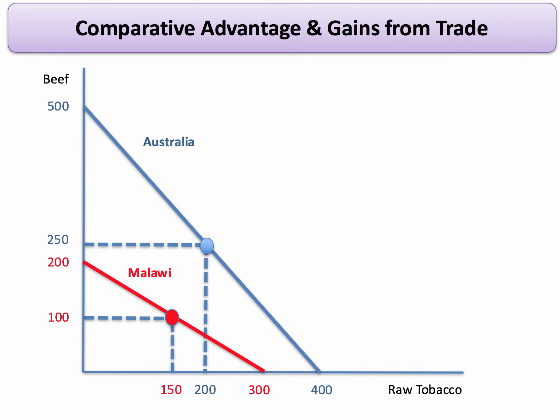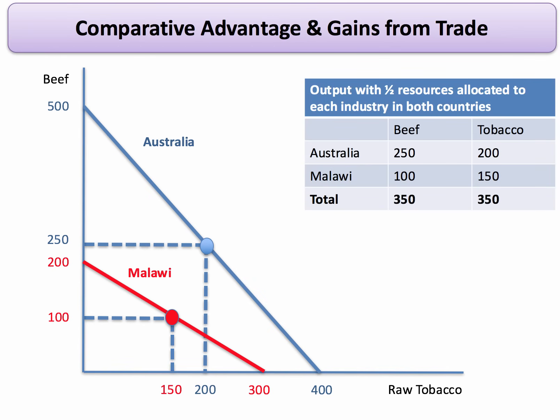Notice the difference in the gradient of the two lines — this is key to understanding comparative advantage. With half of resources allocated to both goods, Australia and Malawi could produce 250 units of beef in total: Australia 250, Malawi 100. They could also produce 250 units of tobacco: Australia 200, Malawi 150.